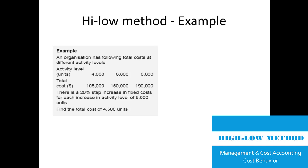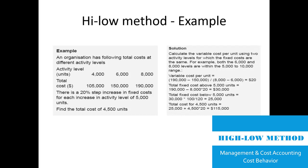So six thousand and eight thousand units have the same fixed cost, while four thousand units would have twenty percent less. If six thousand units represent one hundred twenty percent of fixed cost, then four thousand units represent one hundred percent. The requirement is to find the total cost at four thousand five hundred units. The solution: calculate variable cost per unit using two activity levels for which the fixed cost is the same.